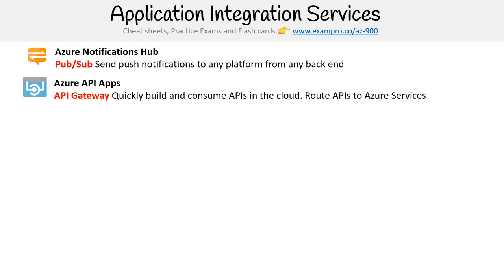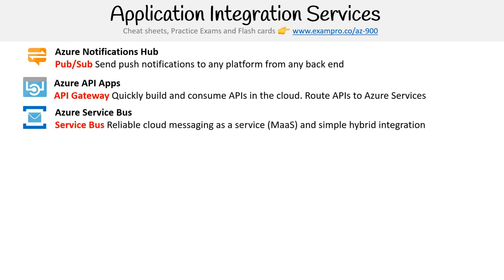Next we have Azure API Apps. This is essentially an API gateway, so you can quickly build and consume APIs in the cloud. Those APIs will have API endpoints, and you can route them to Azure services, or maybe functions or containers. It's a way of building an API in the cloud.